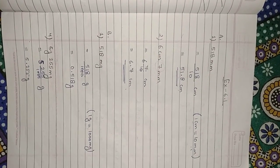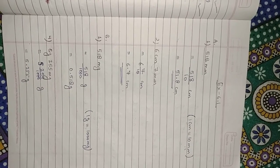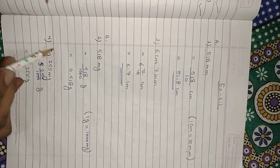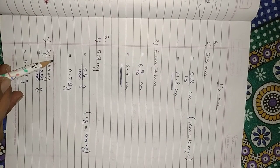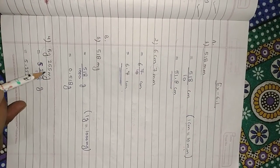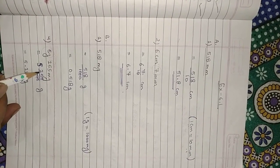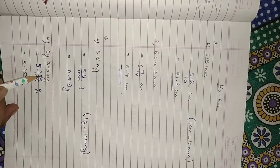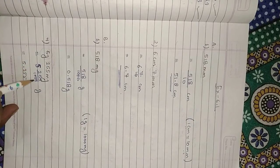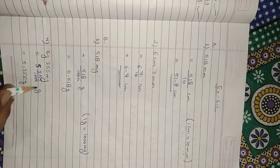Fourth: 5 grams 255 milligrams. The 5 is already in grams. We only convert 255 milligrams into grams: 255 divided by 1000. There are 3 zeros, so count 3 digits and place the decimal before 2, giving 0.255. Write 5 as the whole number. Answer: 5.255 grams.